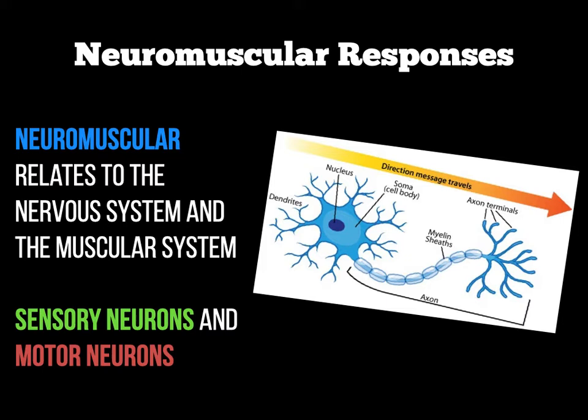The key things to label in a motor neuron are its nucleus, the axon — which is the middle section down to the terminals — and the axon terminals, which are also known as motor end plates. That's quite important as you move forward with what happens with muscle contraction.